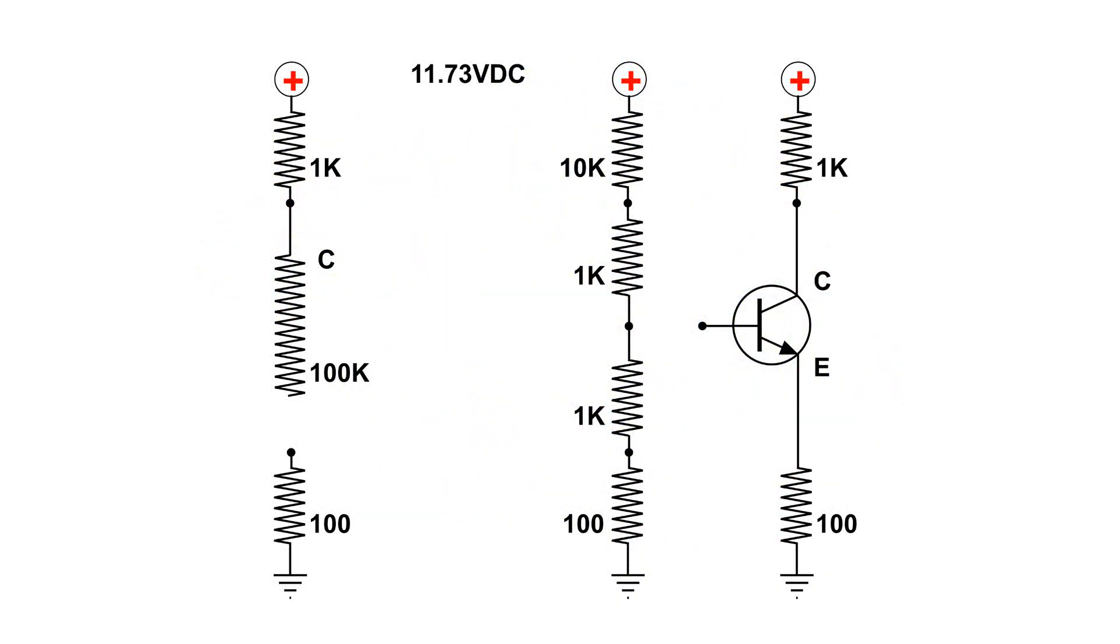This is the circuit that I have on the trainer. All the way to the left there's a string of resistors: a 1k, then a 100k variable resistor, then a 100 ohm at the bottom. I'm going to be measuring the voltage at point C.